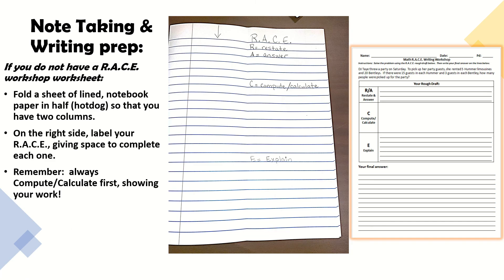For note-taking and writing prep, if you do not have a RACE workshop worksheet, you can take a piece of notebook paper and fold it in half like a hot dog so that you have two columns. On the right side, label your RACE, giving space to complete each one. And remember, always calculate and compute first, showing your work.